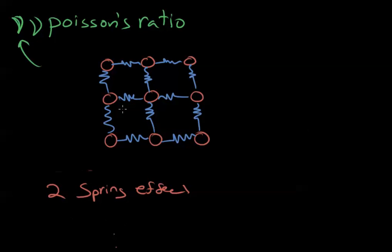If I ask you what's the Poisson's ratio of this material when I pull on the material this way, actually in this case it would be zero. ν would be equal to zero, or Poisson's ratio would equal zero.